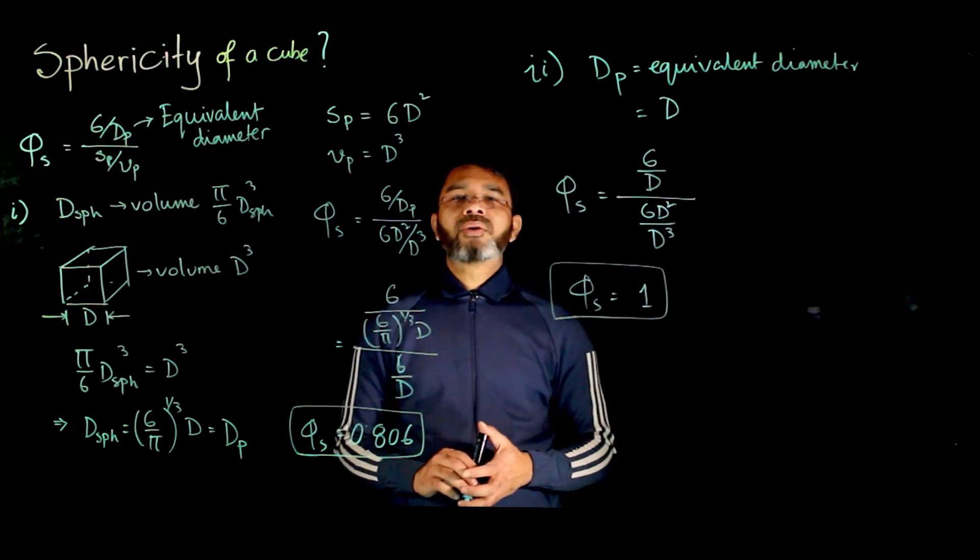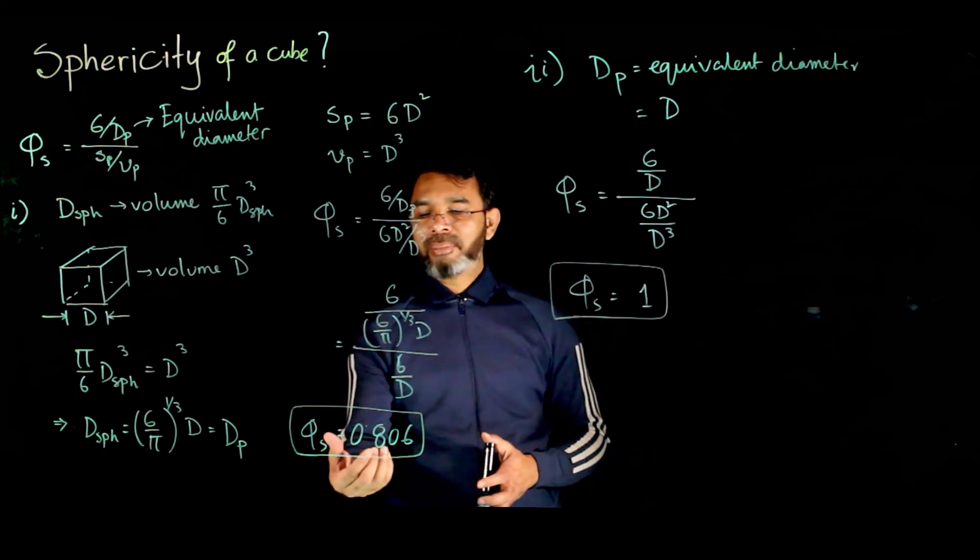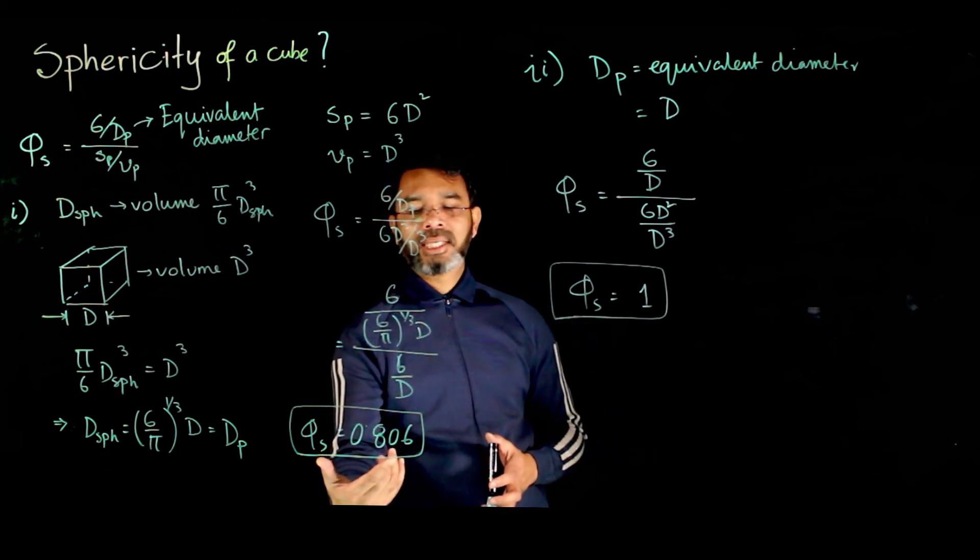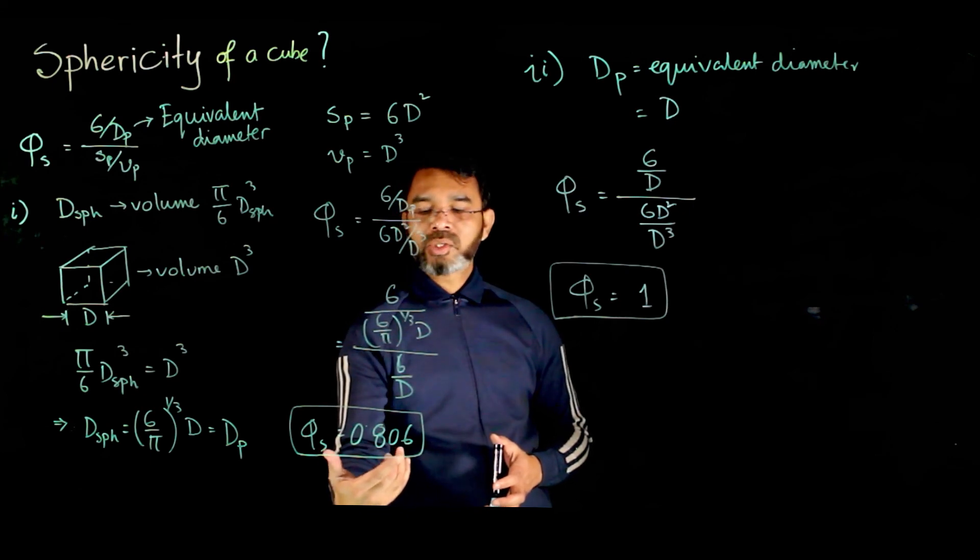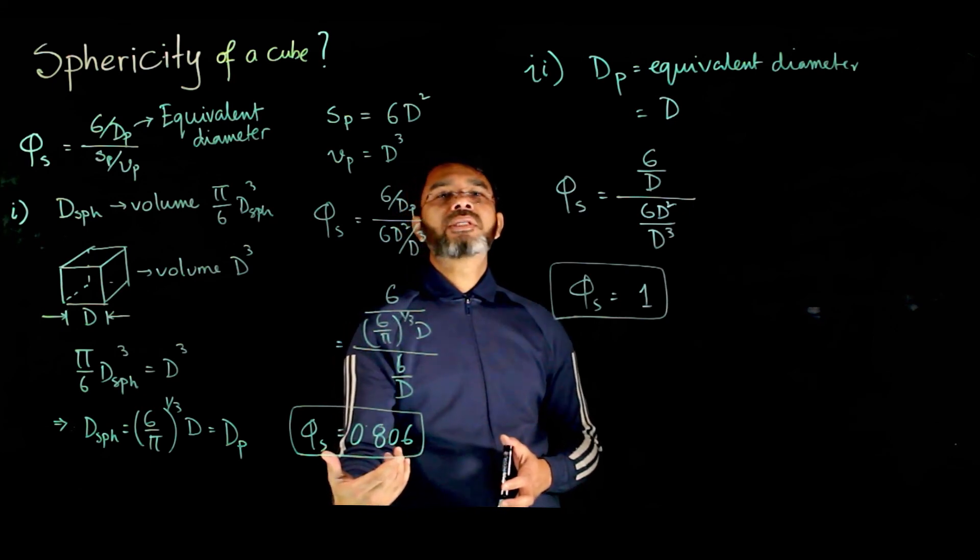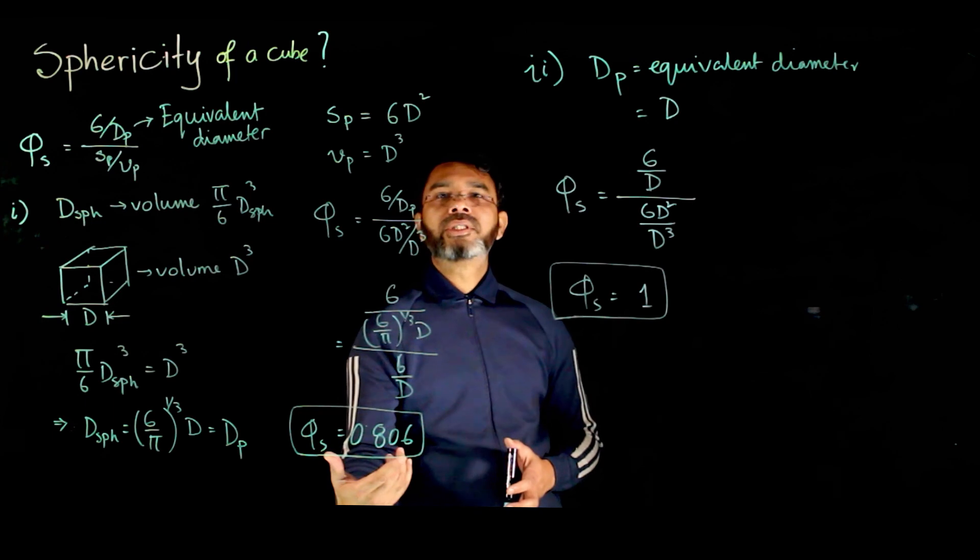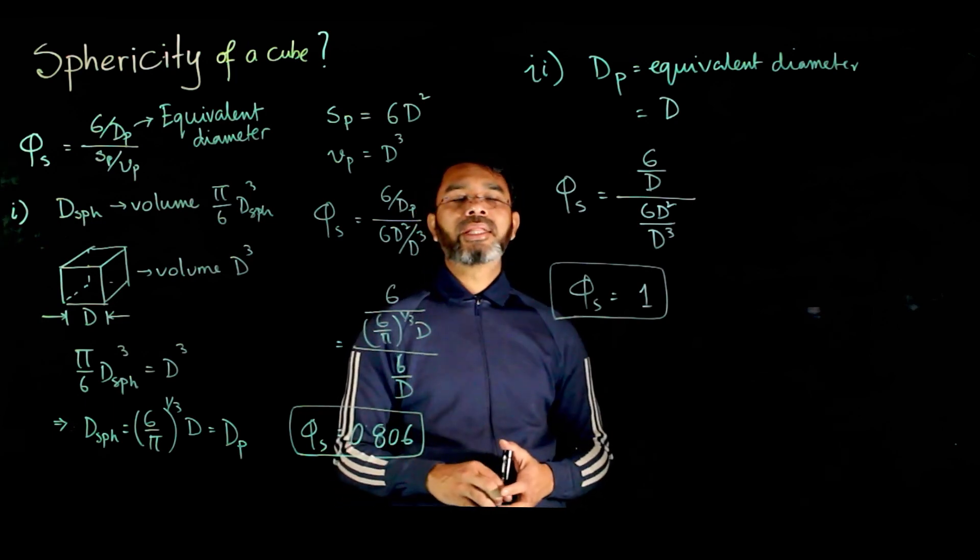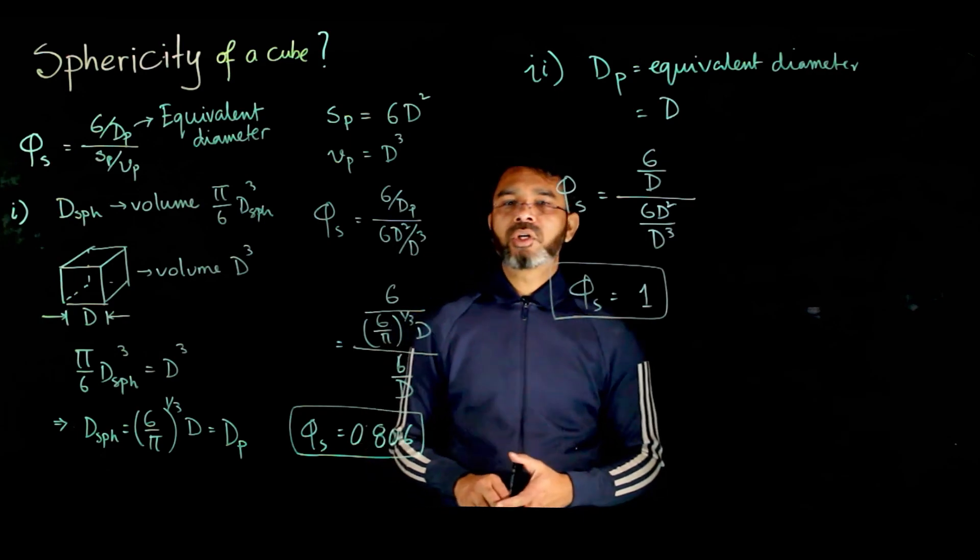As long as you are consistent, you can have a value of sphericity of the cube to be 0.806, and while calculating other properties, you maintain the same definitions. The calculation should not be erroneous. However, the main point is to maintain the consistency based on which you define.